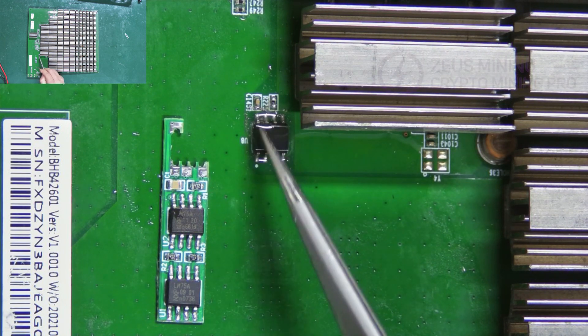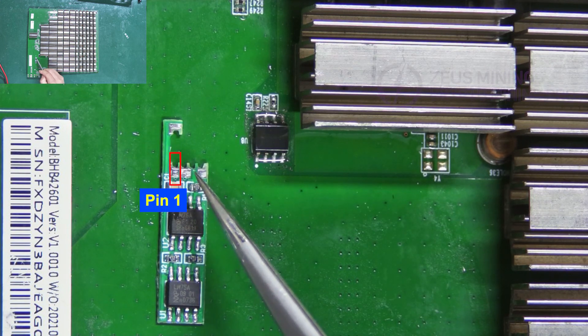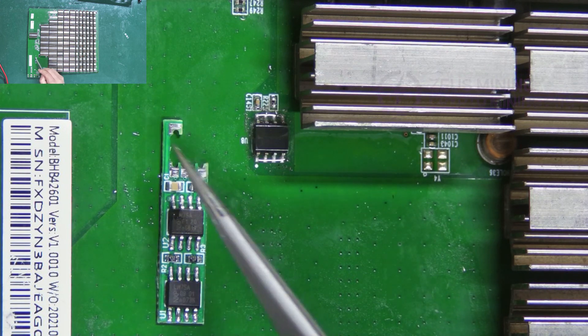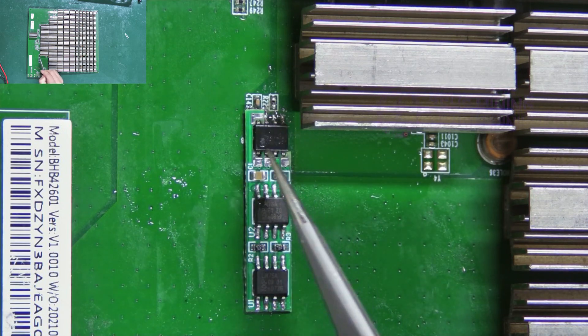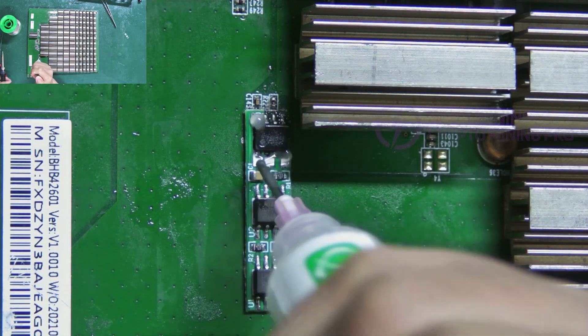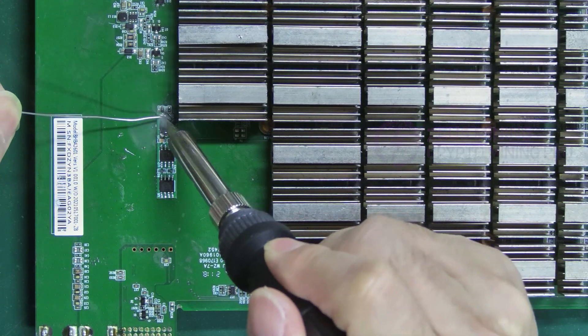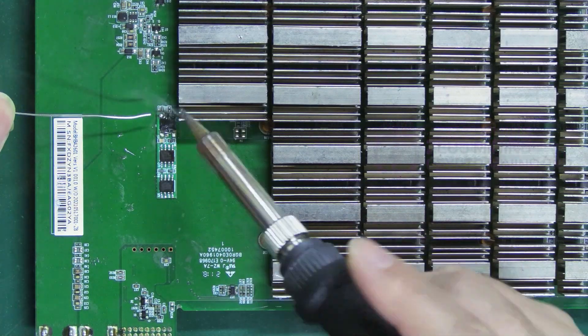On the module these correspond to pins 1, 2, 4, and 8. Now we need to place it accordingly, apply flux, and then solder it onto the hash board using the solder wire and soldering iron.